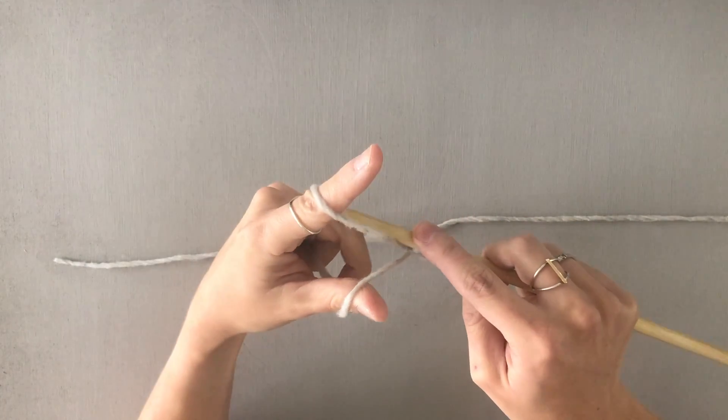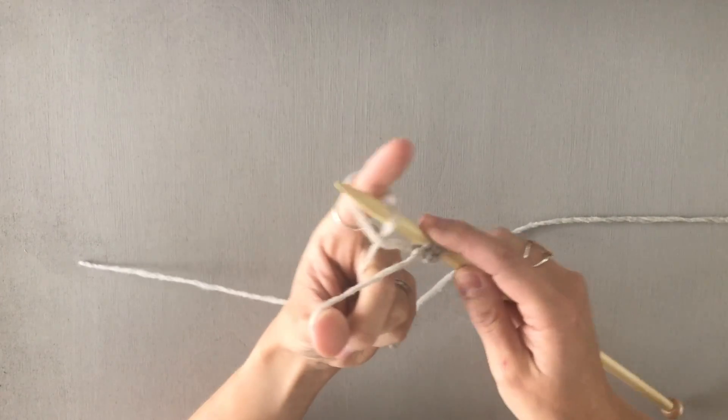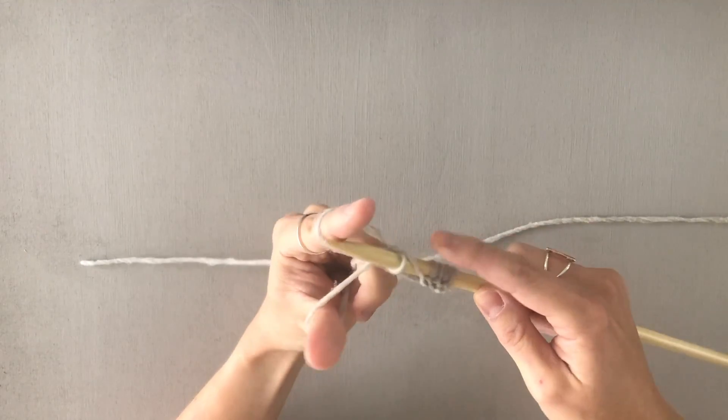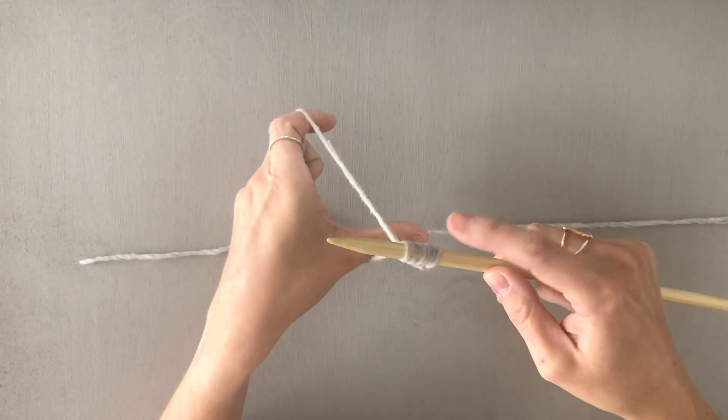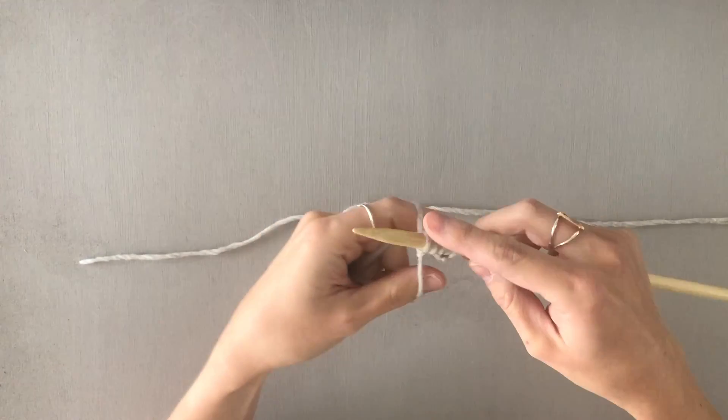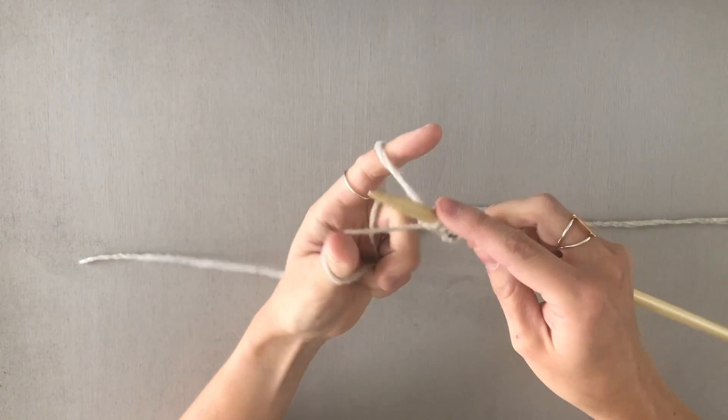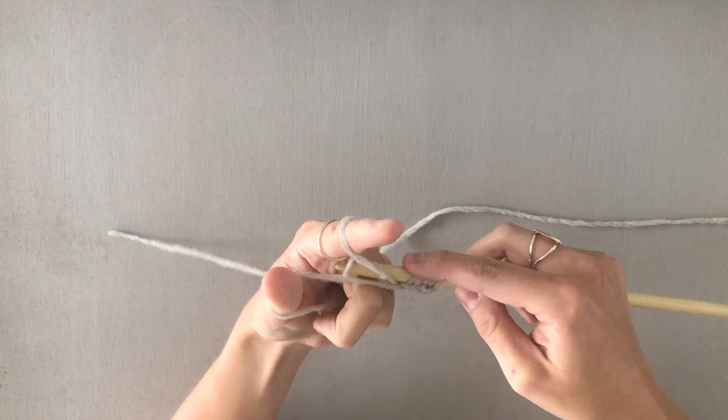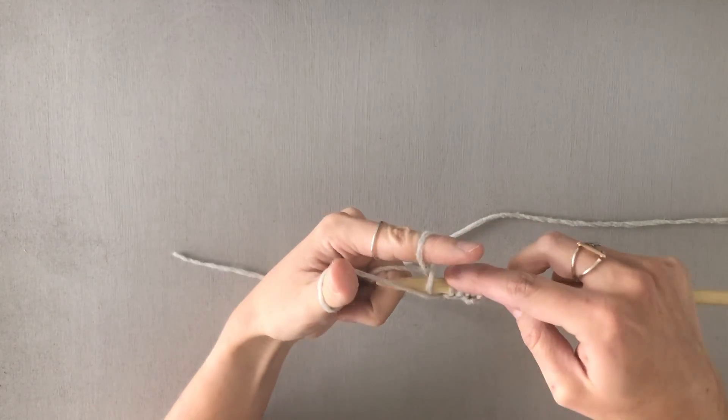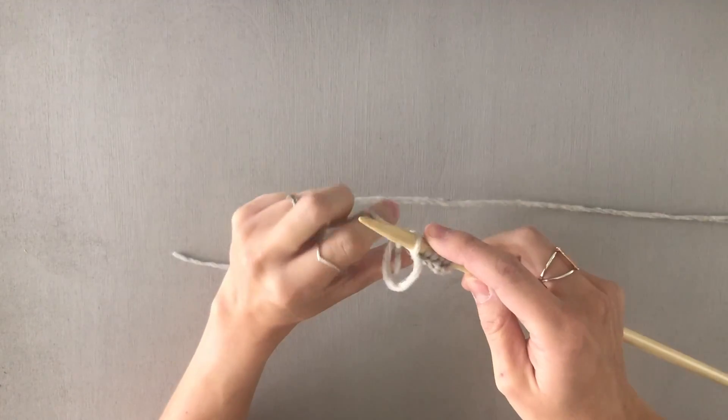I really like to use this when I'm doing ribbing. I'll do a long tail cast on for a knit stitch and then this long tail purlwise cast on wherever there will be a purl stitch in the ribbing. It creates a nice elastic cast on so that it's not too tight.